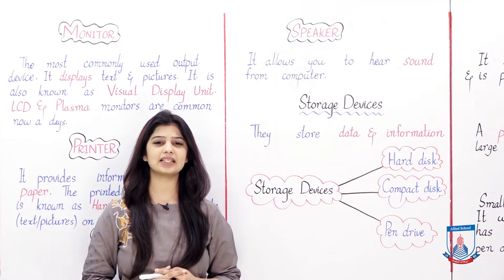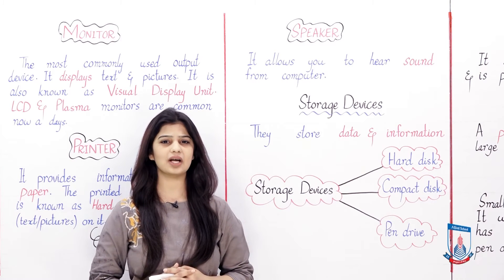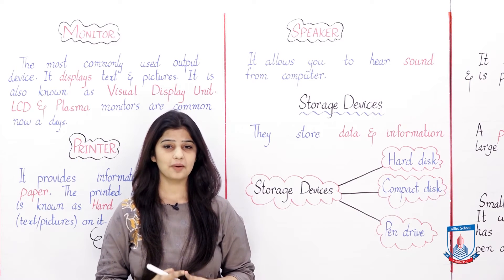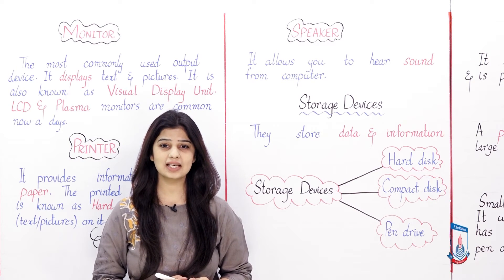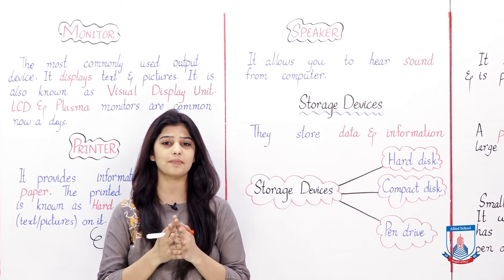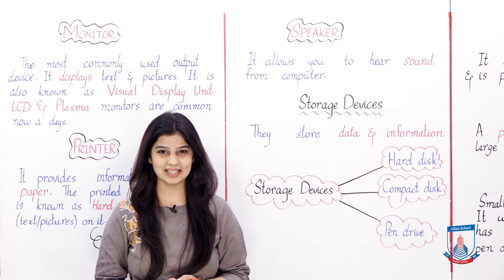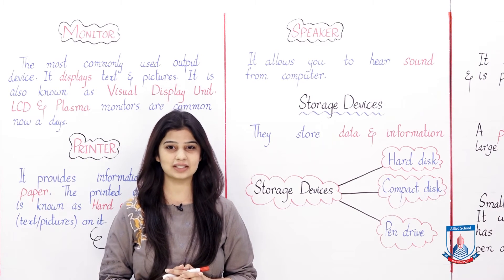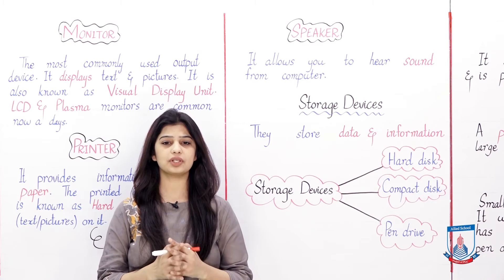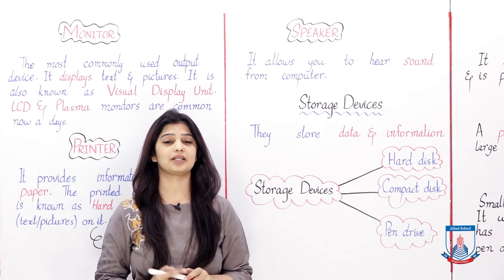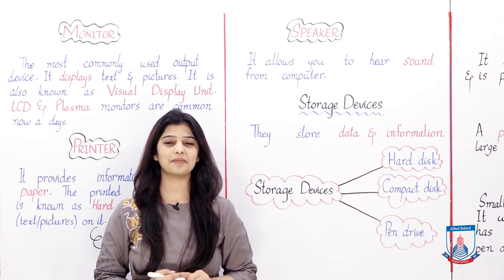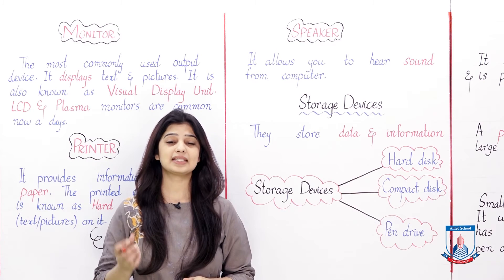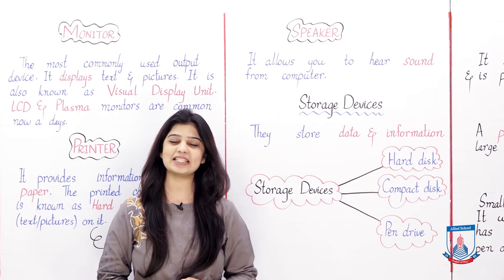These are some types of output devices. Let's recall which output devices we have studied. We have studied Monitor — it is used to display text or pictures. Next, the device we use to print on paper is called Printer. And the output device which gives you sound is the Speaker.